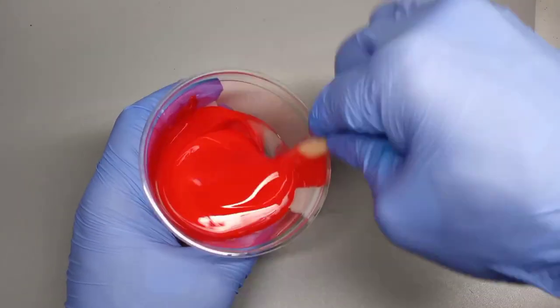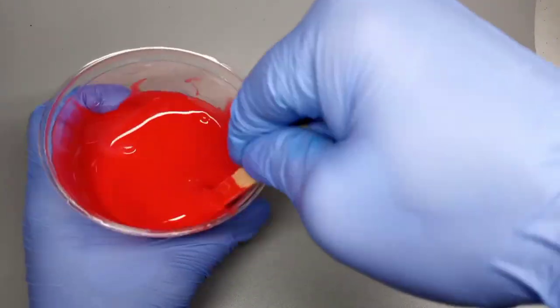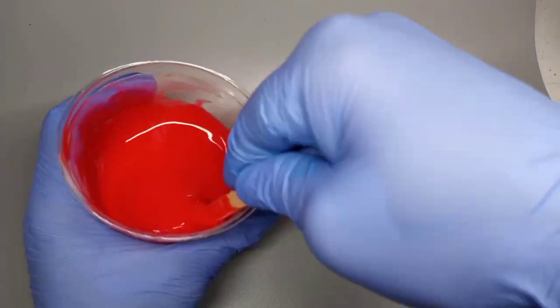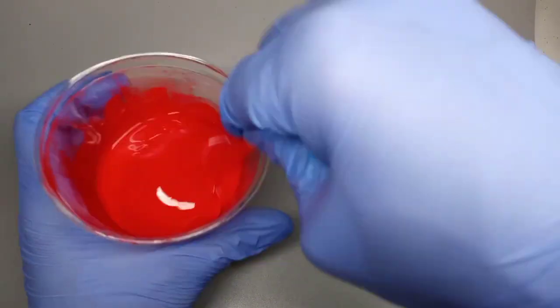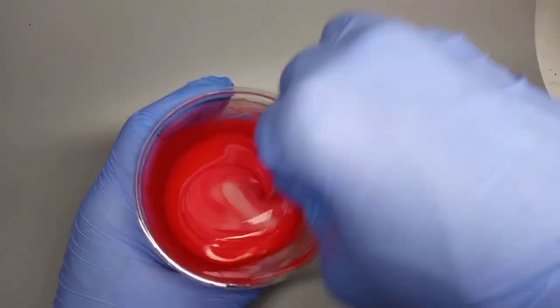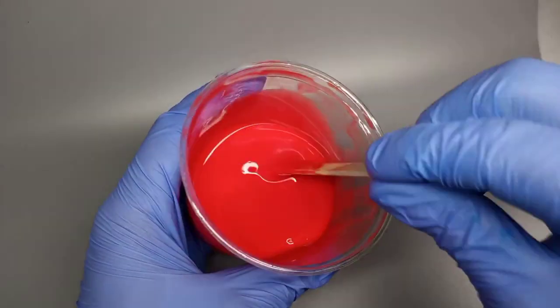When mixing, I like to start off by scraping the sides several times, working my way into the center, making sure that both the white and the red parts are properly mixed to ensure that my mold is fully cured and hard when it's dried.